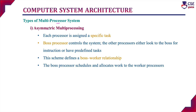There are two types of multiprocessor system: asymmetric multiprocessing and symmetric multiprocessing. In asymmetric multiprocessing, each processor is assigned a specific task. Among the available processors, one processor is considered the boss processor, which controls the complete computer system. The other processors either look to the boss for instruction or have predefined tasks. This scheme is called the boss-worker relationship. The boss processor monitors other processors and schedules and allocates work to the worker processors.